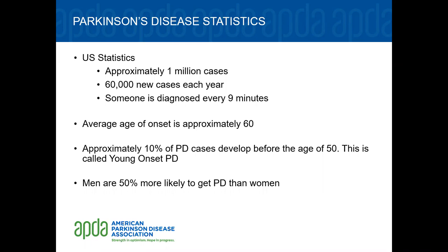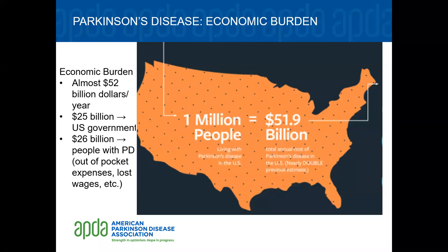In the United States, there are approximately 1 million people with Parkinson's disease, with 60,000 new cases diagnosed each year — meaning someone is diagnosed every nine minutes. The average age of onset is approximately 60, and approximately 10% of cases develop before the age of 50, which is called young onset Parkinson's disease. Men are 50% more likely to get Parkinson's disease than women. A 2019 study calculated the economic burden of PD at over 50 billion dollars every year, with half shouldered by the government and half by people with PD in the form of co-pays, lost wages, and other out-of-pocket expenses.